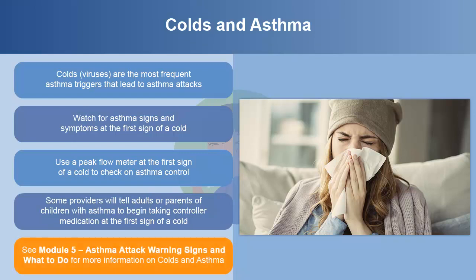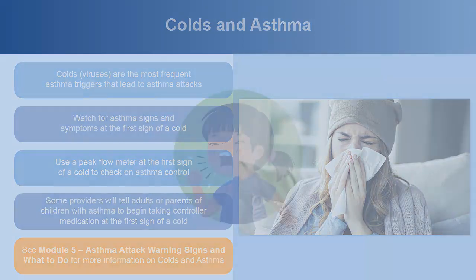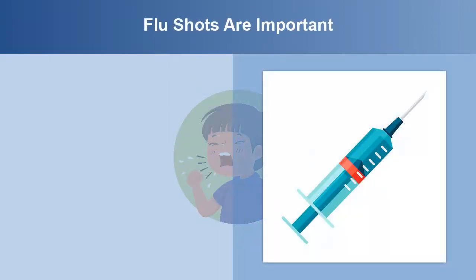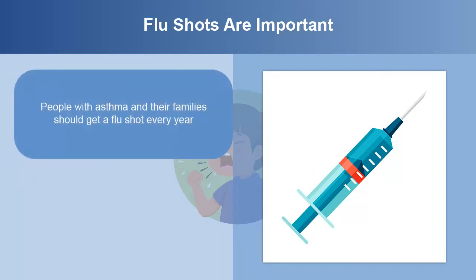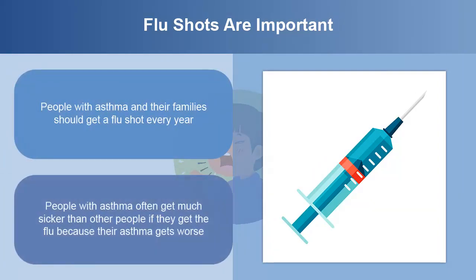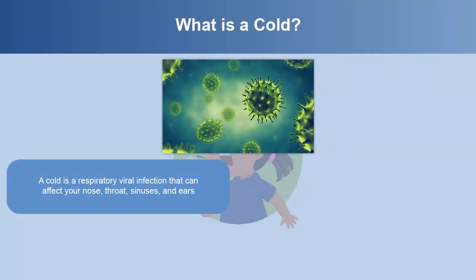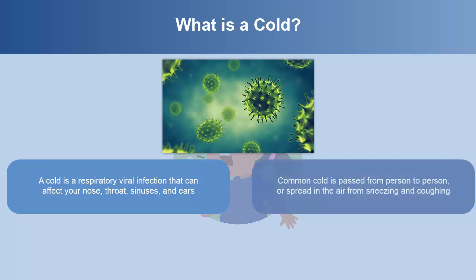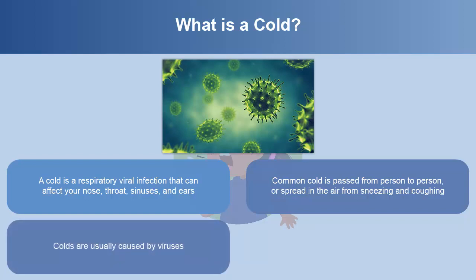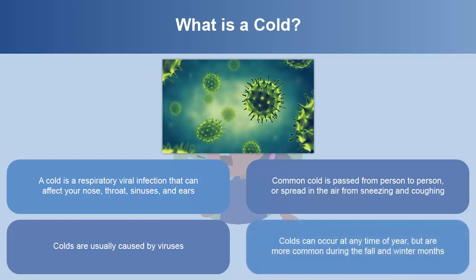See Module 5, Asthma Attack Warning Signs and What to Do, for more information on colds and asthma. People with asthma and their family should get a flu shot every year. People with asthma often get much sicker than other people if they get the flu because their asthma gets worse. A cold is a respiratory viral infection that can affect your nose, throat, sinuses, and ears. The common cold is passed from person to person or spread in the air from sneezing and coughing. Colds are usually caused by viruses and can occur at any time of the year but are more common during the fall and winter months.